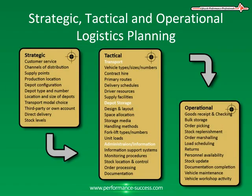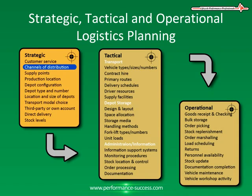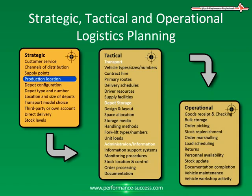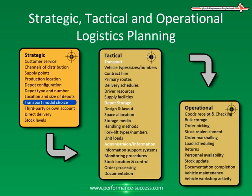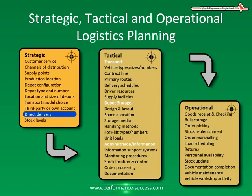Let's look at the main logistics elements for the different planning time horizons. In the strategic time zone, you have customer service, channels of distribution, supply points, production locations, depot configuration, depot types and number, the location and size of the depots, transport modal choice, third party or own account, direct delivery, and stock levels.